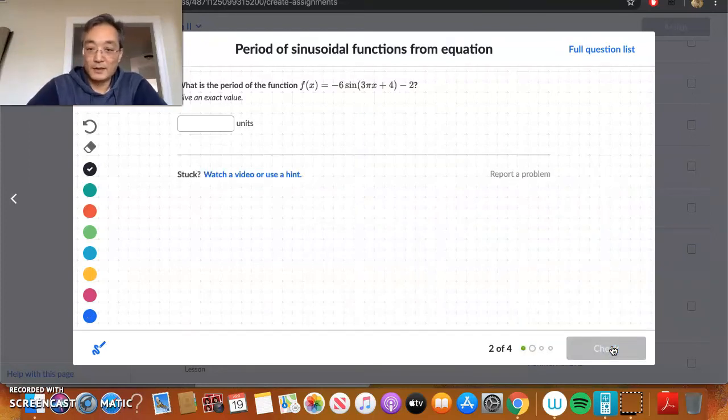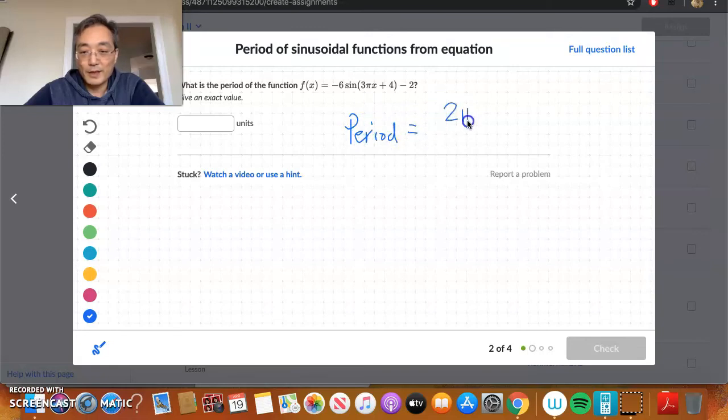Here, again, we're given a function. f of x is negative 6 sine of 3 pi x plus 4 minus 2. Again, in order to find the period, we need to use this relationship. Period is equal to 2 pi over the frequency. And, as we said, the coefficient of x is your frequency. In this case, it is 3 pi. So, f here is equal to 3 pi.